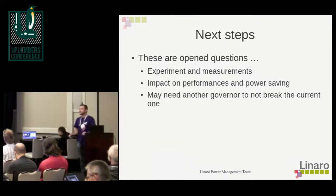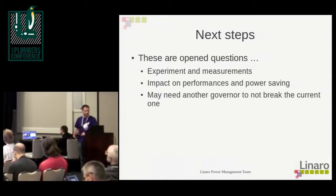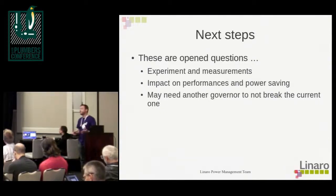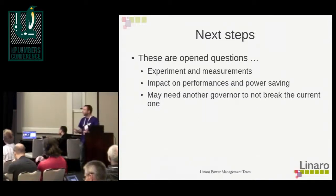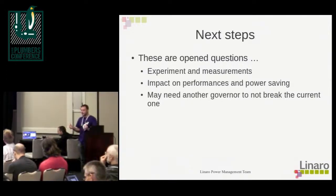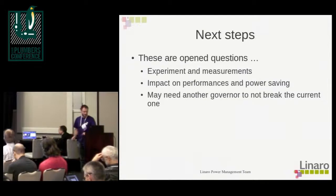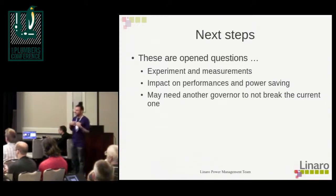All these questions are open. The next step is to code, do experiments and measurements. Maybe we need to create another governor, because the menu governor is heavily used on Intel systems and we don't want to break it. The goal is to simplify the governor and use more information coming from the scheduler — a more straightforward governor that relies more on the scheduler to make decisions.